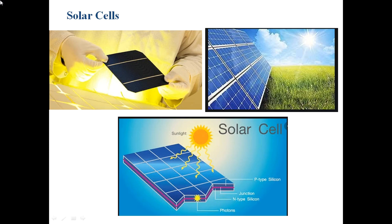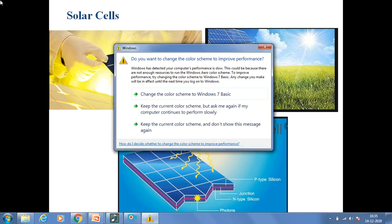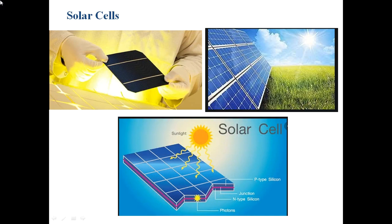Today we will be discussing solar cells. We have already studied about photodiodes — the principle and working of it. Solar cells are in principle almost similar to photodiodes, because solar cells are basically photovoltaic devices wherein the input is a photon and the output will be a voltage appearing across the output terminals.